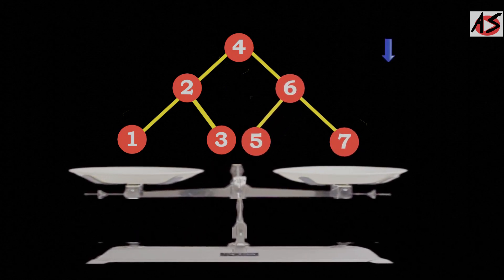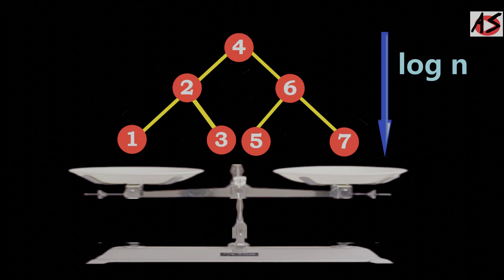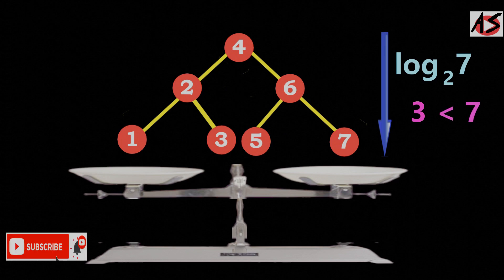Now you can see the worst case time complexity that is height of the tree and this is log n. Since we have 7 nodes, so log 7 base 2, that is 2.81, that is near to 3 and it is smaller than order of linear search, that is 7 here.